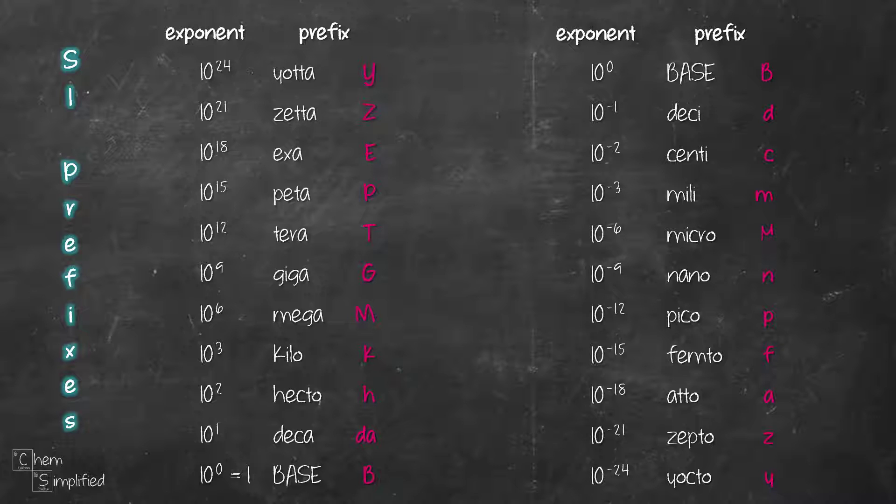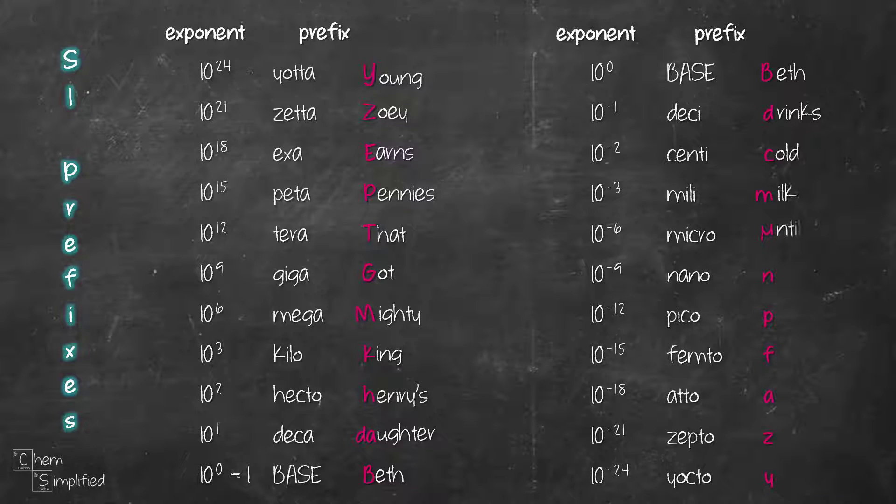Here's the story. Young Zoe earns pennies that got mighty King Henry's daughter Beth. Beth drinks cold milk until 9 p.m. for a zillion years.